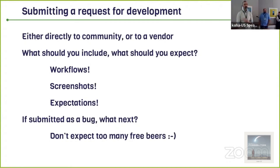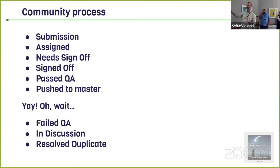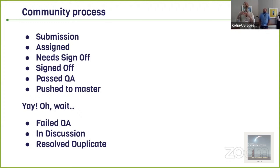In discussion can show up at any time before pushed to master. You can file a bug and immediately set it to in discussion. If you see a bug that is past QA and you have a problem with it, set it to in discussion to stop that process. In discussion is slightly different from failed QA: failed QA means it doesn't work, while in discussion means there are questions. When your questions have been answered, please move it out of in discussion.